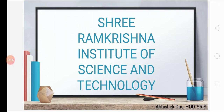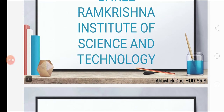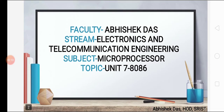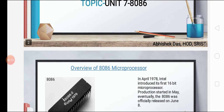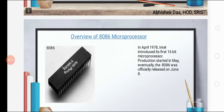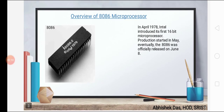Hello everyone, myself Abhishek Das. I am going to discuss today the 8086 microprocessor. It is the first 16-bit microprocessor which was invented in the year 1978 in the month of April, but officially it was launched in June.